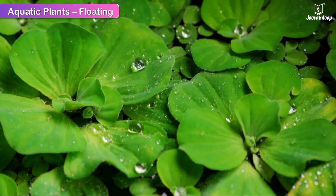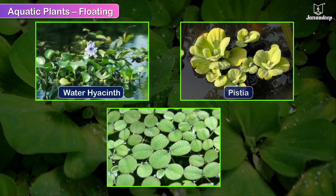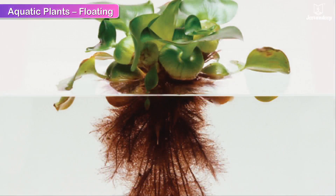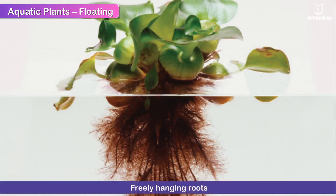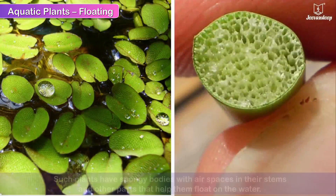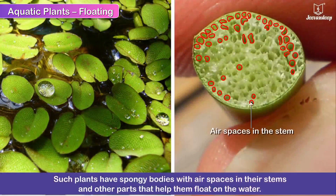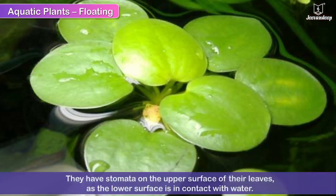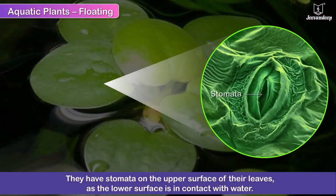Floating plants. Some aquatic plants float freely on the surface of the water body they grow on. Water hyacinths, pistia and duckweed are some aquatic plants that float on fresh water bodies with their roots hanging freely in the water. Such plants have spongy bodies with air spaces in their stems and other parts that help them float on the water. They have stomata on the upper surface of their leaves as the lower surface is in contact with water.